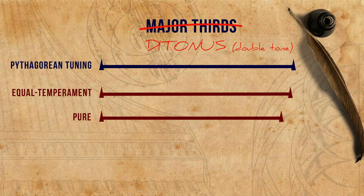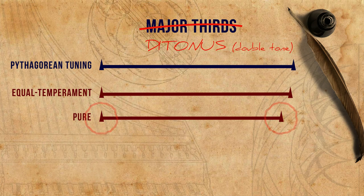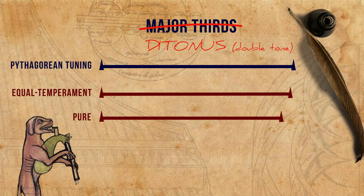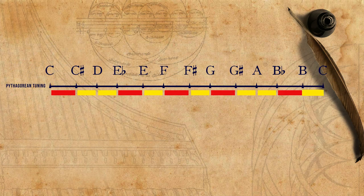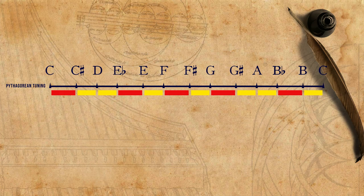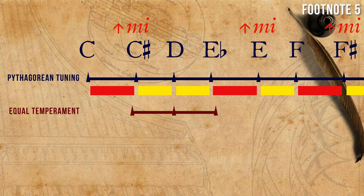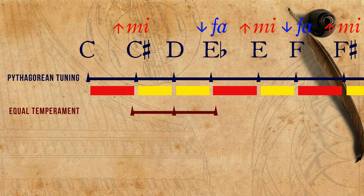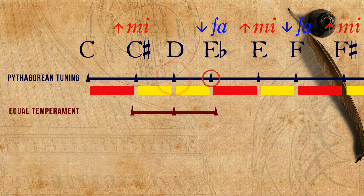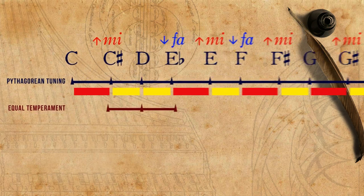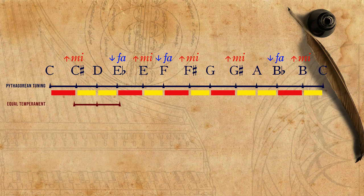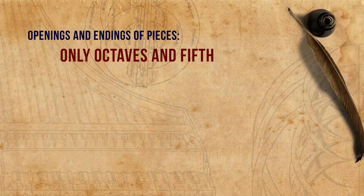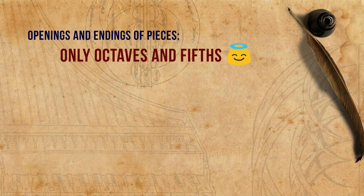To compare, here is a pure major third. And here is a Pythagorean major third — a ditonus. The semitones in this system are not at all equal; there are big semitones and small semitones. In comparison to equal temperament, the Mi notes — the sharps — are slightly higher, and the Fa notes — the flats — are slightly lower. The tuning can be seen in connection with the conventions according to which certain music was composed. For example, the openings and endings of pieces in this period only ever used octaves and fifths, intervals that are purely tuned in this tuning.